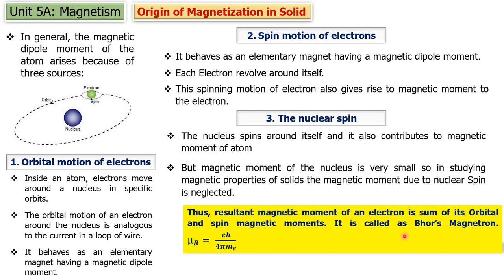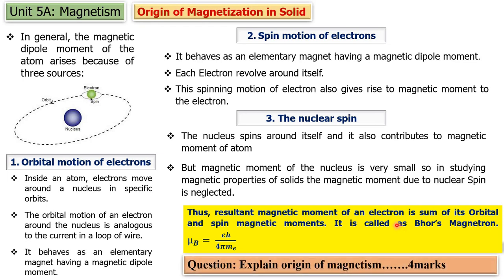So this is all about the origin of magnetization. The reason for magnetization in a solid is the orbital and spin magnetic moment. This is a simple four-mark question: explain the origin of magnetism. So this is all about origin of magnetization in solid. In the next lecture we are going to study some parameters related to magnetic field.